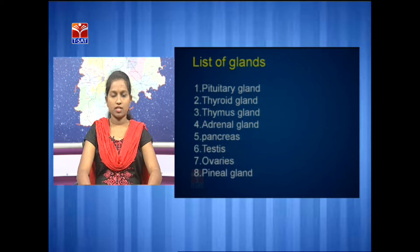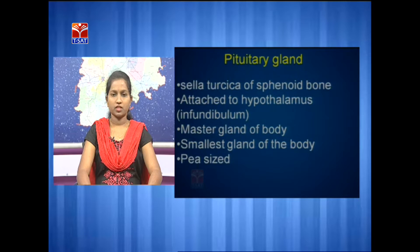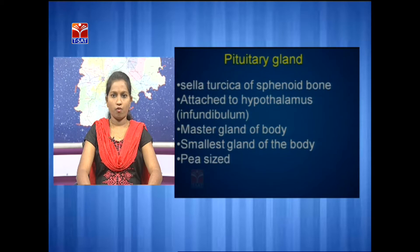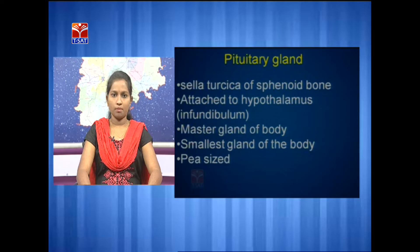The pituitary gland is located in the sella turcica of the sphenoid bone in the brain. It is attached to the hypothalamus by a stalk called the infundibulum or pituitary stalk. This pituitary gland is the very smallest endocrine gland, which is oval-shaped and pea-sized.